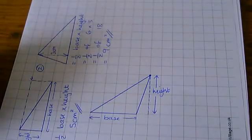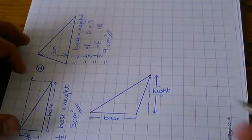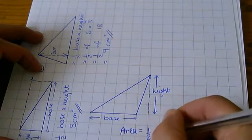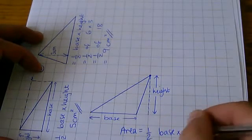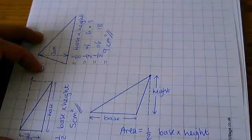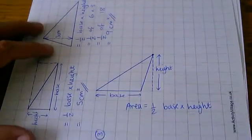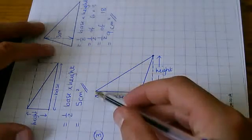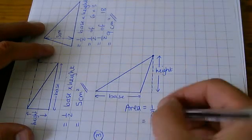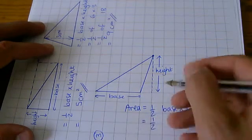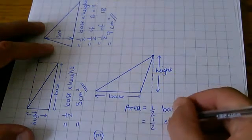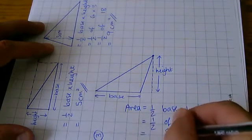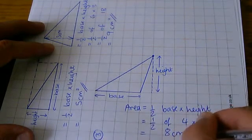So, this triangle is going to have an area of half base times height. And, that's half of this number here, half of 4 centimeters times 4 centimeters. 4 times 4 is 16, half it is 8 centimeters squared.